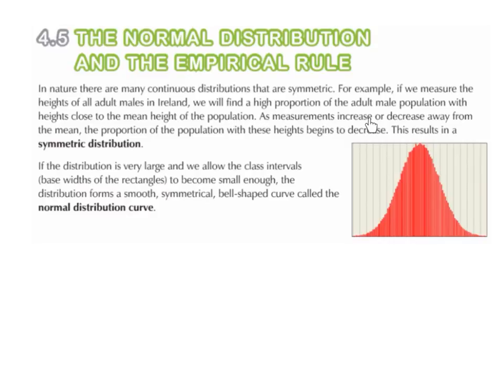As measurements increase or decrease away from the mean, the proportion of the population with these heights begins to decrease. This results in a symmetric distribution.